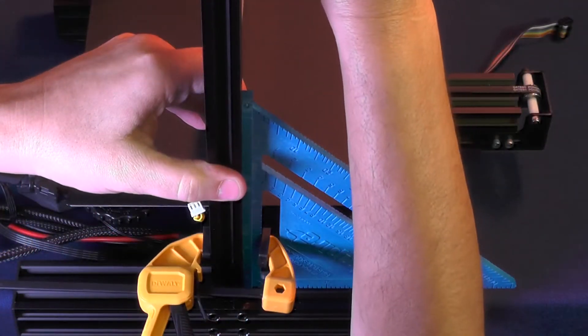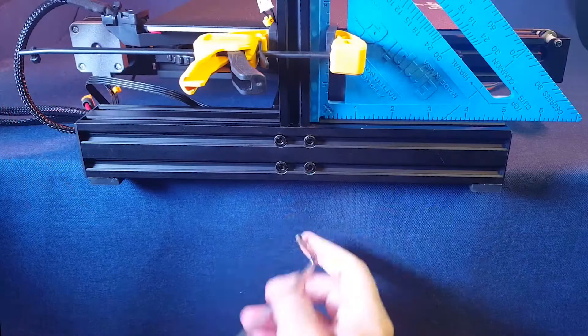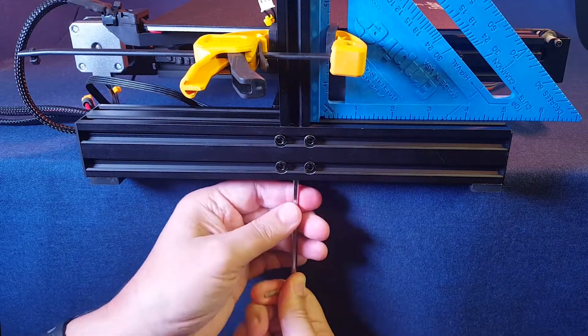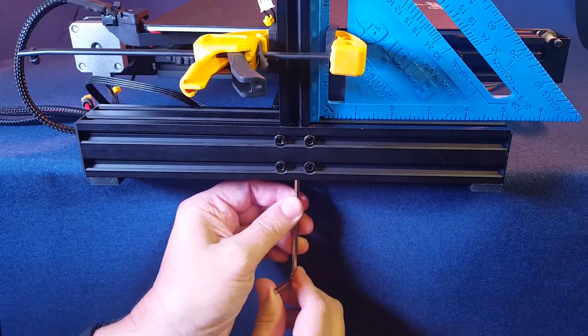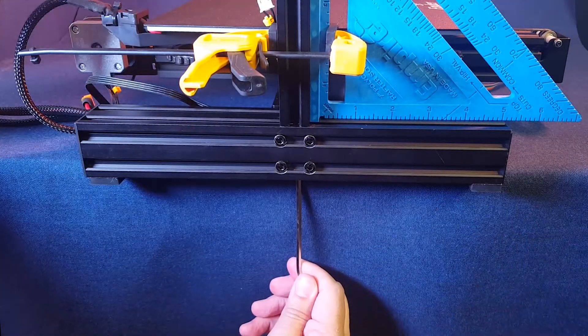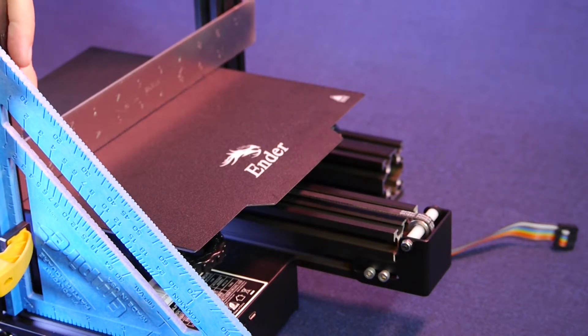As you remember, the 2040 aluminum extrusion is attached to the base of the printer with two screws. So, when you tighten the screw that is closest to you, it will pull the aluminum extrusion towards you. And, on the other hand, if you tighten the screw that is farther from you, that will pull the aluminum extrusion away from you.